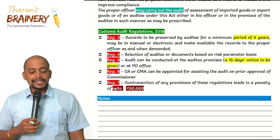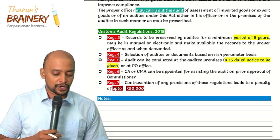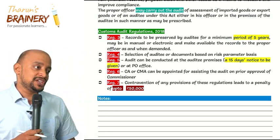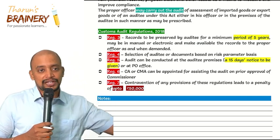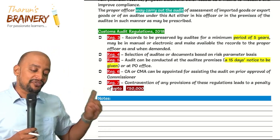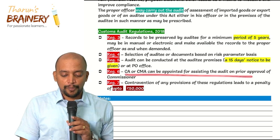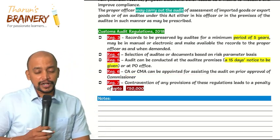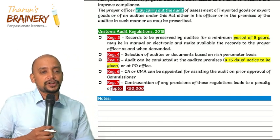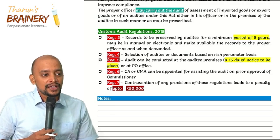Regulation 4 says selection of auditee or documents is on a risk parameter basis — not everyone will be subject to audit. Before conducting the audit, a 15 days' notice must be given, whereas in GST it is 15 working days' notice. Regulation 6 says a CA or CMA can be appointed for assisting the audit. This audit is conducted by the department, not by a CA or CMA, but they can take the support of chartered accountants or cost accountants. Contravention of these provisions will lead to a penalty of up to ₹50,000.